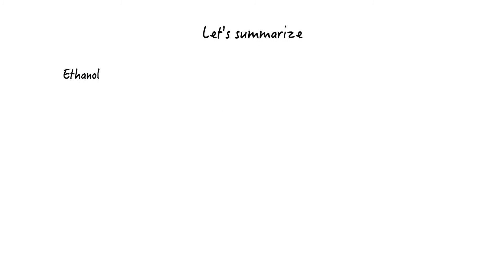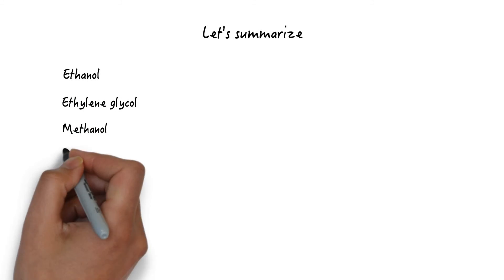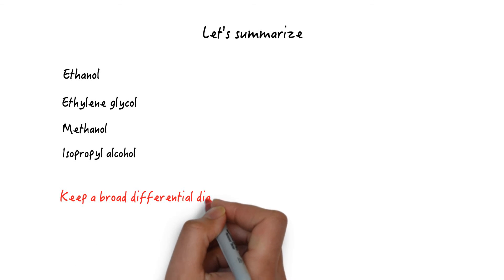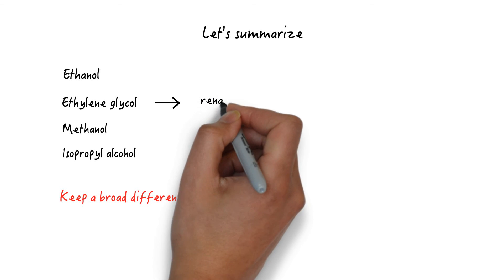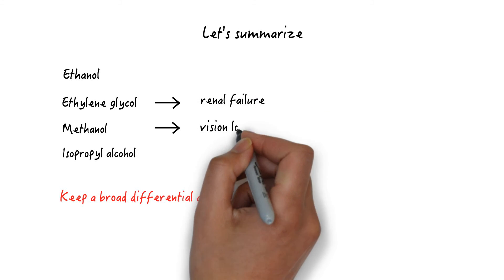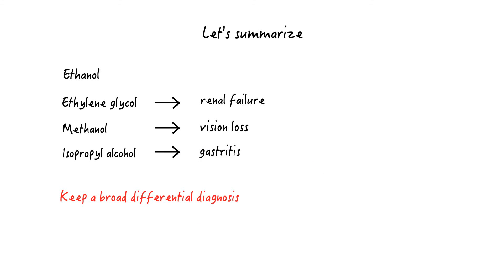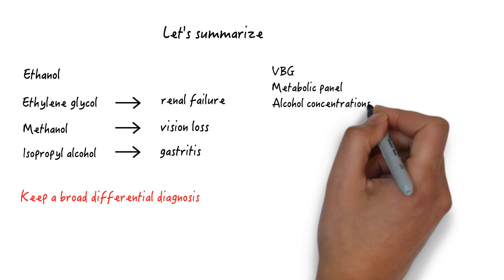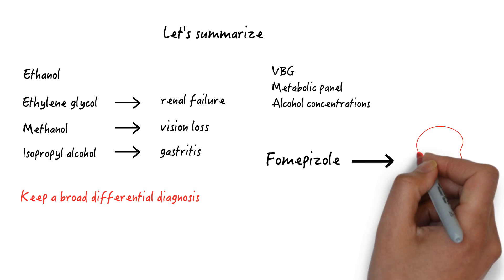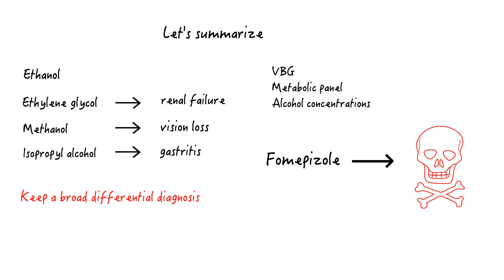Let's summarize. Ethanol, ethylene glycol, methanol, and isopropyl alcohol are all intoxicating alcohols. The differential diagnosis for the intoxicated patient is broad and should include consideration for the toxic alcohols. Toxicity includes renal failure with ethylene glycol, vision loss with methanol toxicity, and hemorrhagic gastritis with isopropyl alcohol toxicity. Evaluate with VBG, metabolic panel, and alcohol concentrations, and consider treatment with fomepizole to block metabolism of ethylene glycol and methanol to their toxic metabolites. Fomepizole is indicated while alcohol concentrations are pending or for patients with ethylene glycol or methanol concentrations above 20 mg per deciliter and an ethanol concentration at or below 100 mg per deciliter.